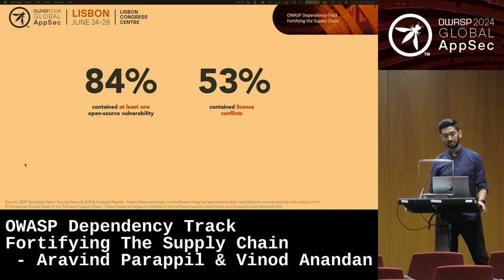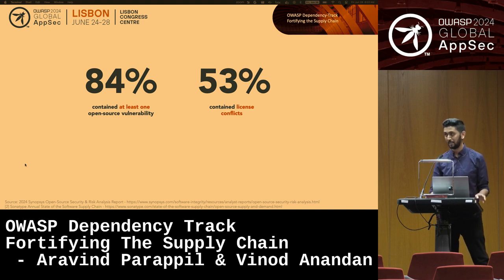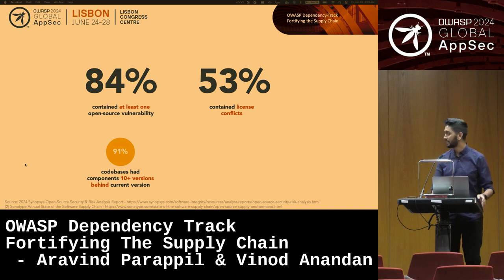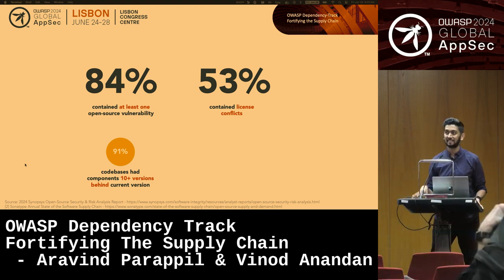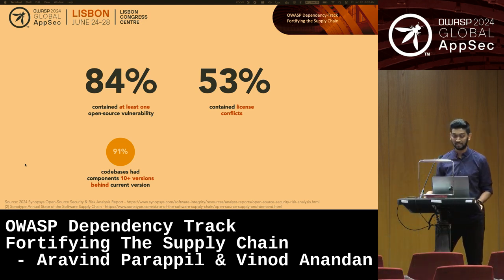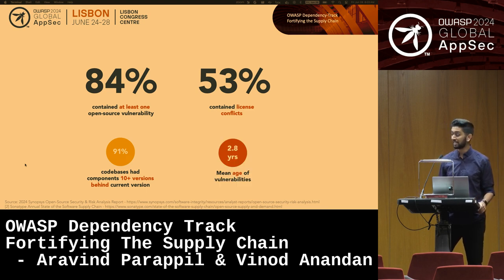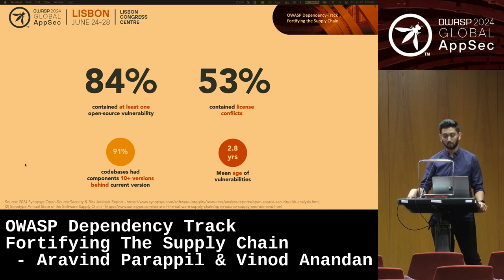These are some of the stats I saw, and even more interesting were two specific numbers from the report. 91% of the codebases surveyed had components that were 10 or more versions behind the current version of that software library. That is insane, and equally insane is the mean age of vulnerabilities — a vulnerability remains in your code for 2.8 years on average.